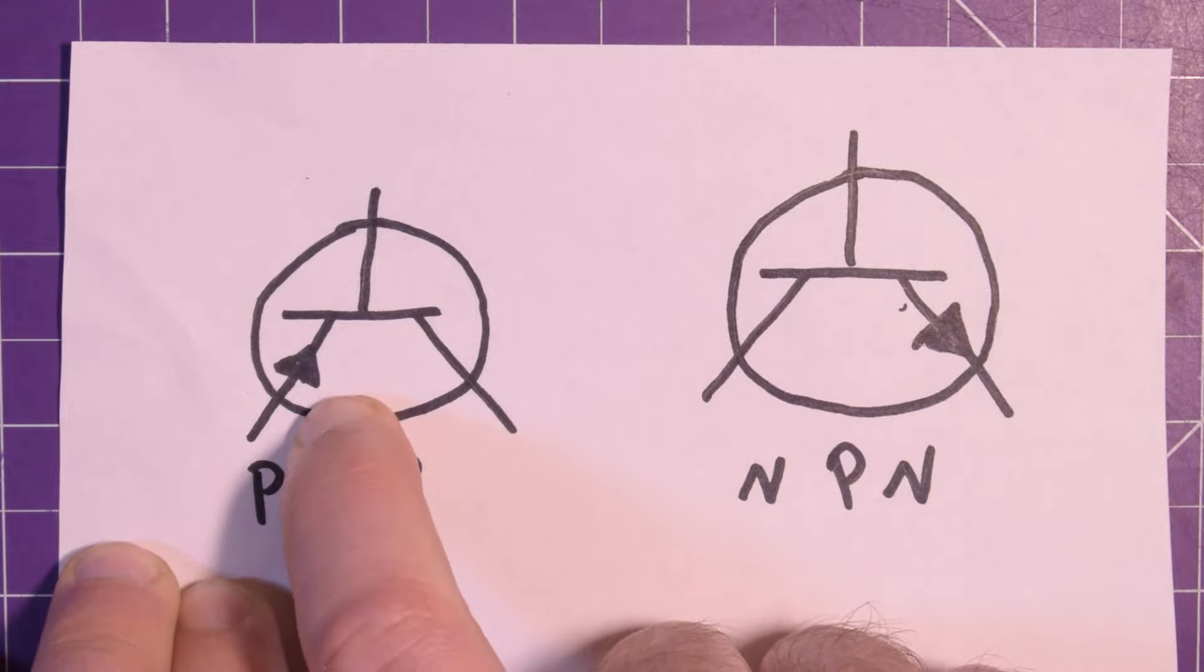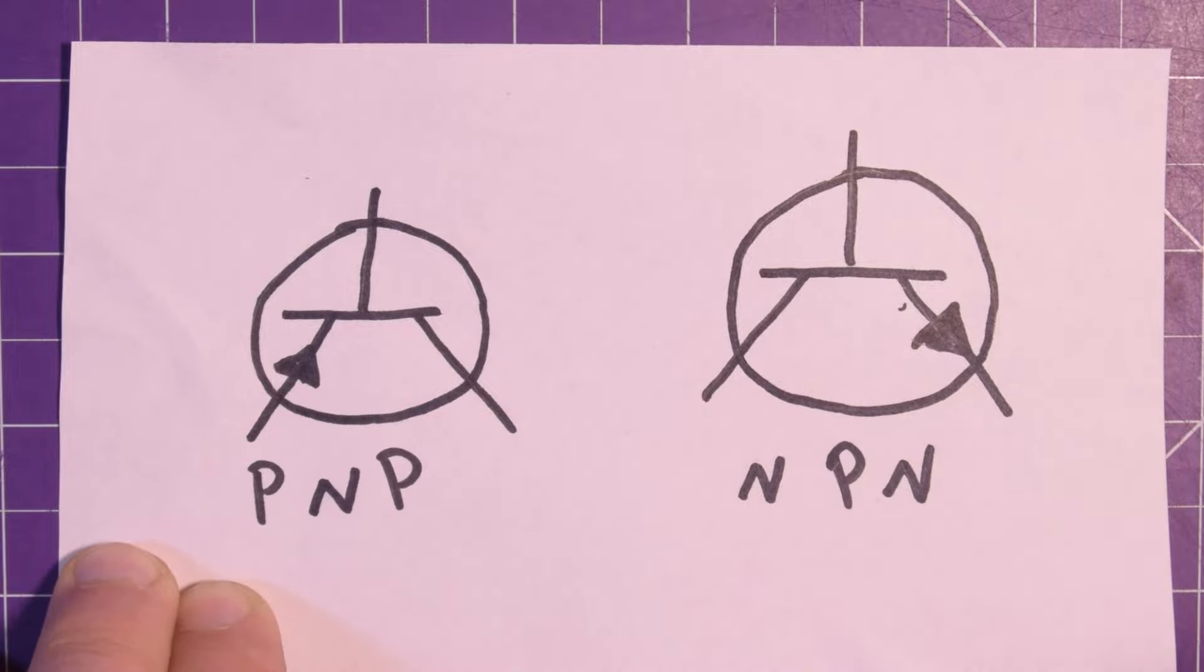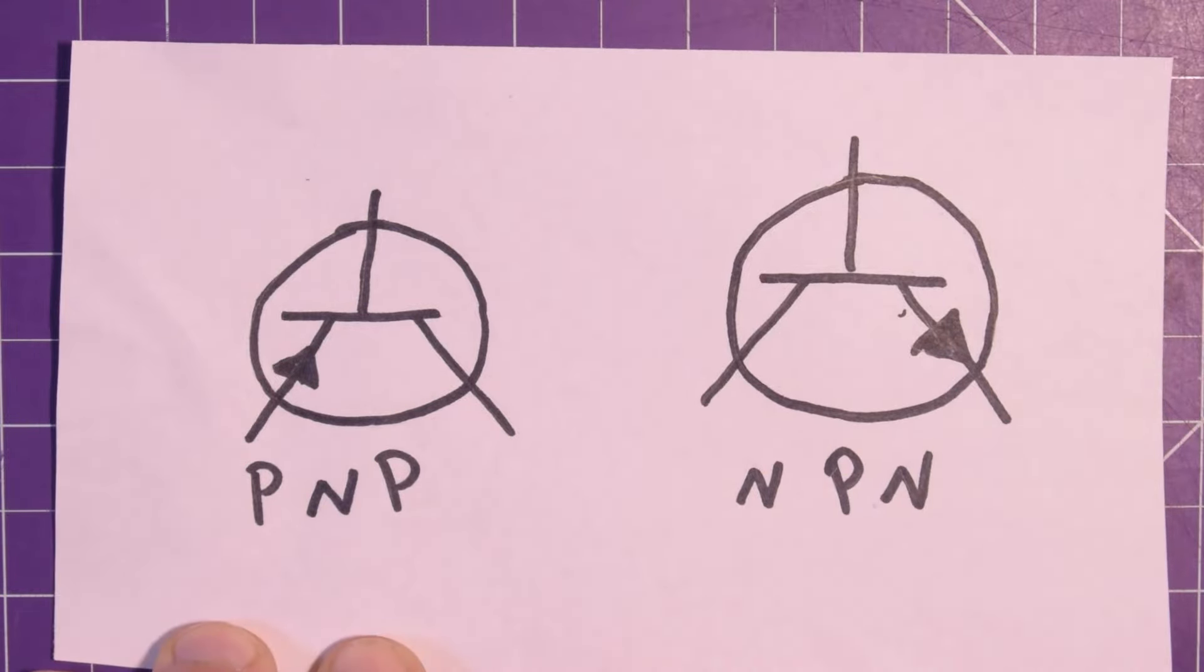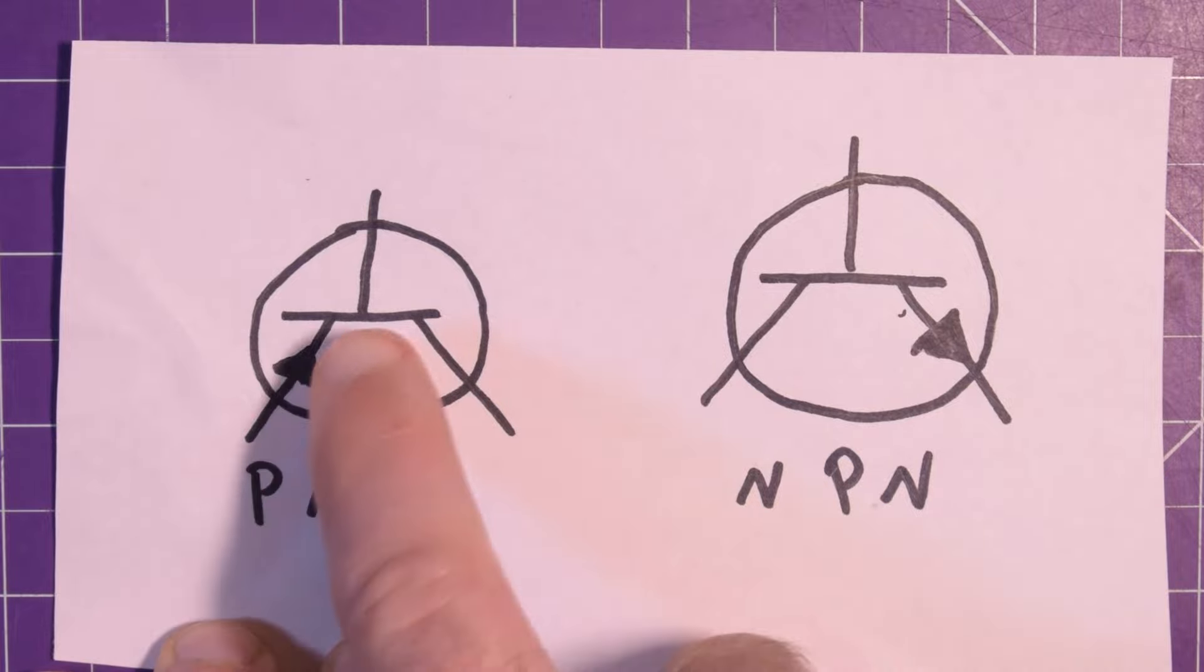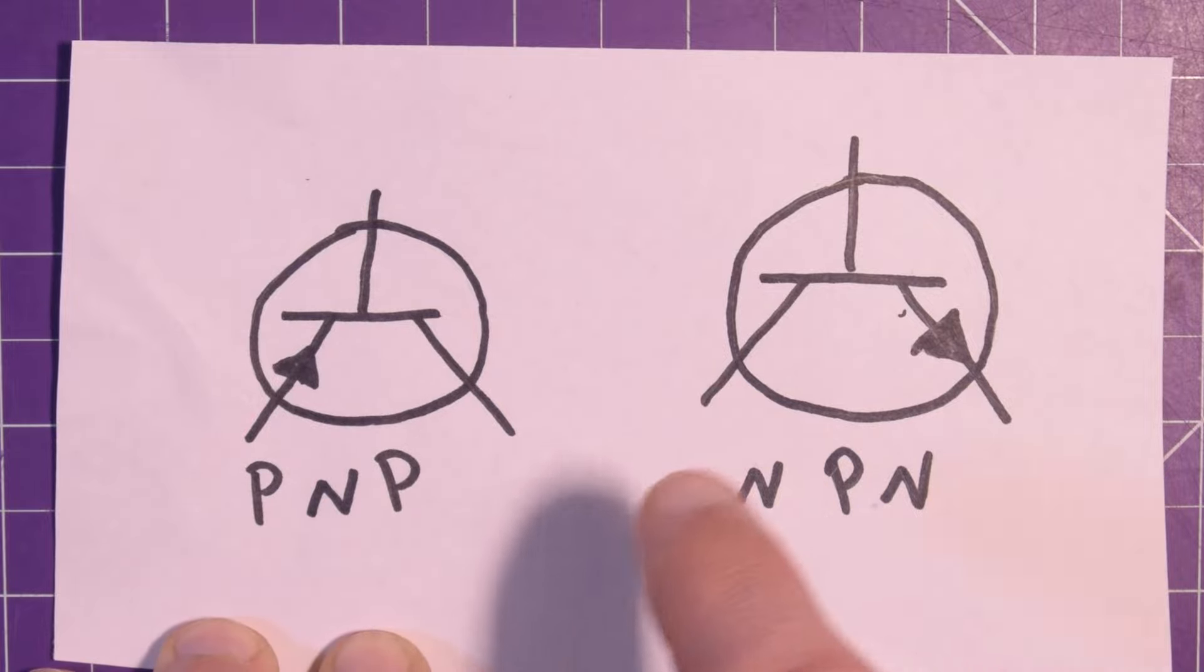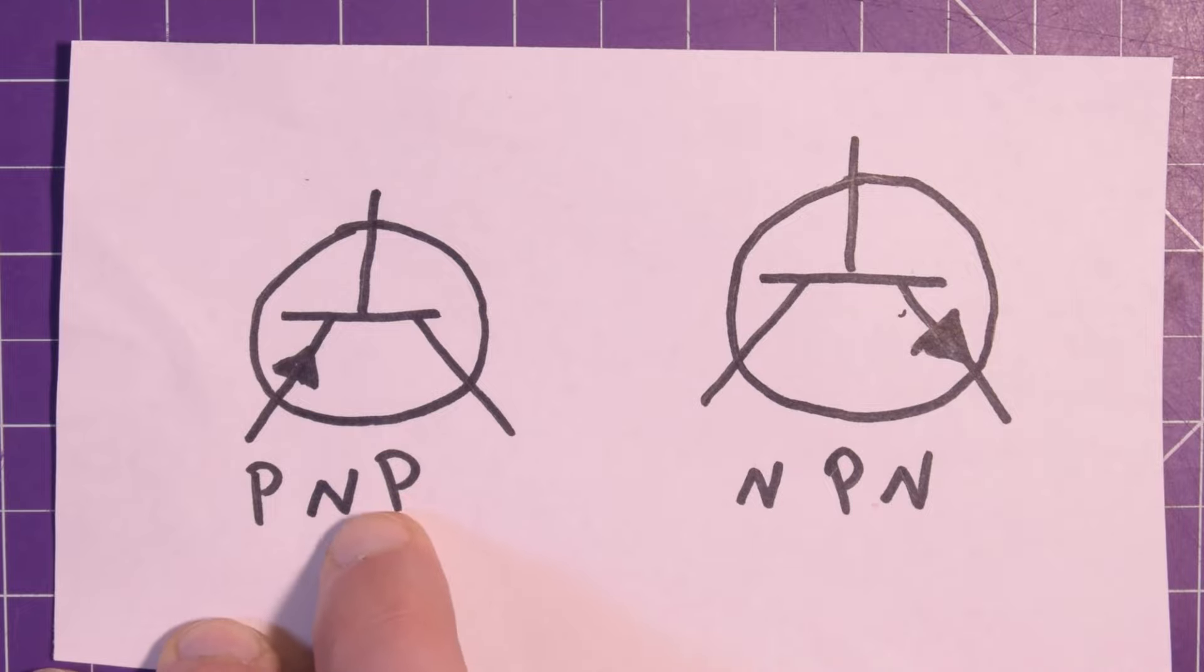That's because there's a diode inside of these transistors just by the way they're made, and that denotes that current can only flow in one direction. It also kind of tells you how it's going to work, but we're going to get into that later. For now you just need to know that this symbol denotes PNP and this one NPN.